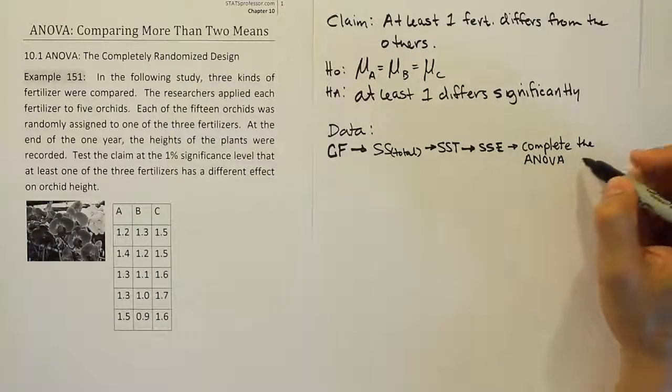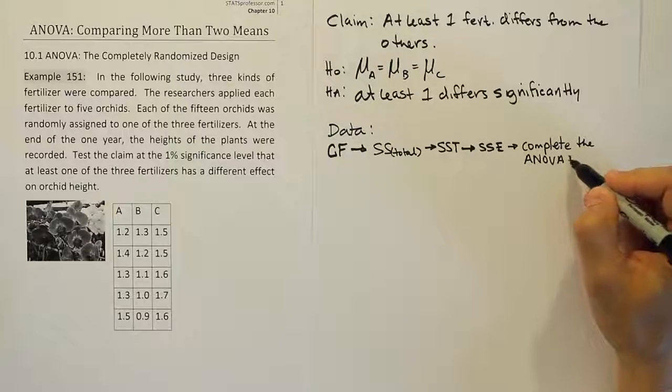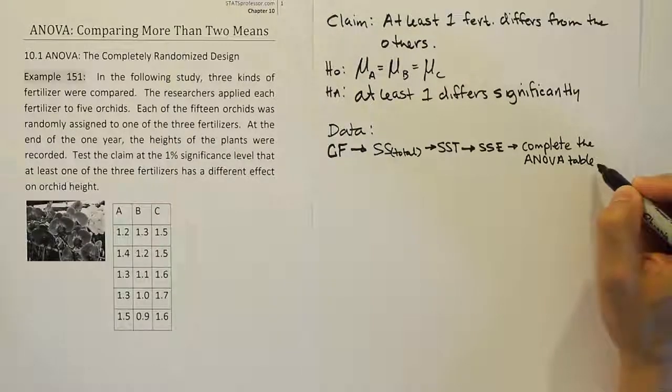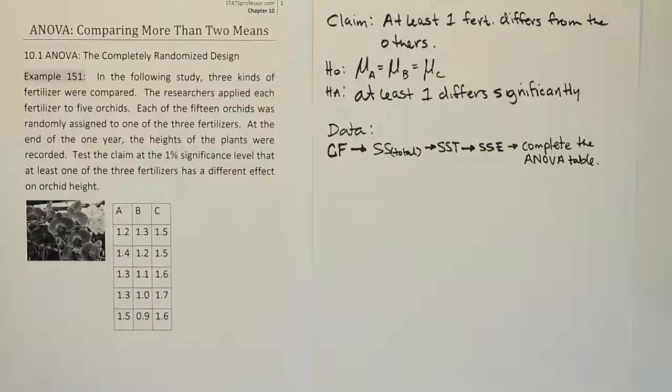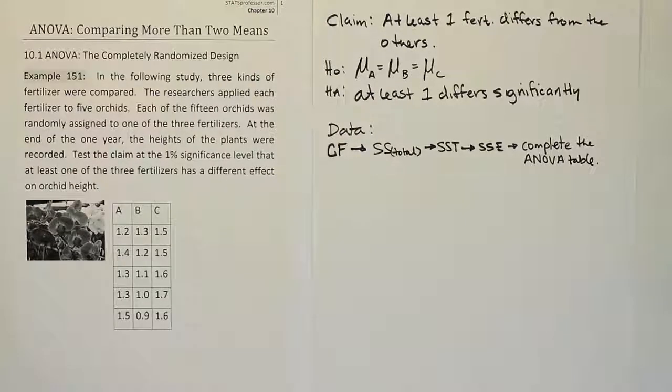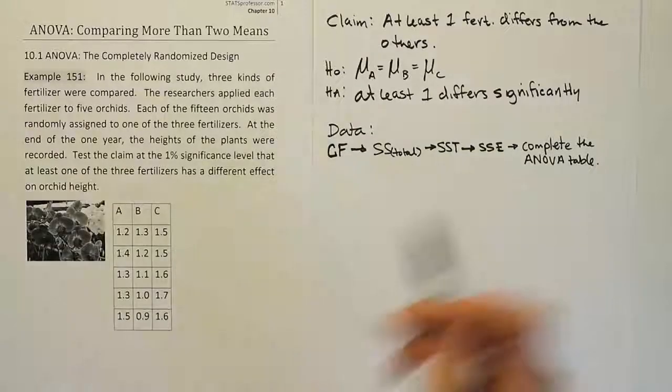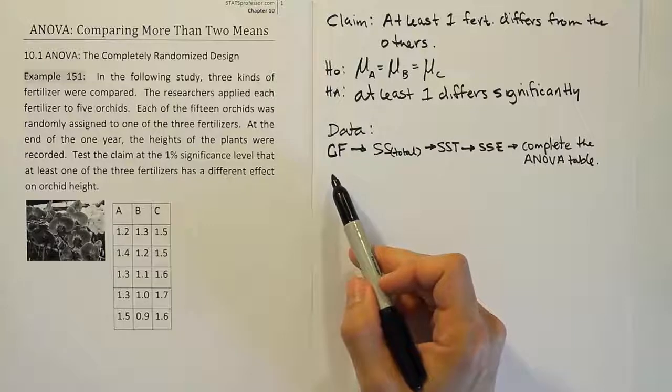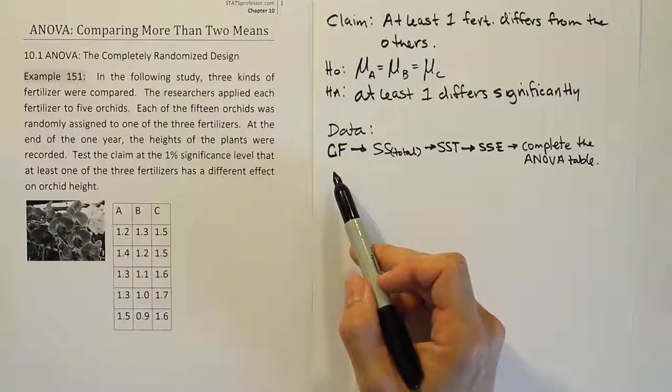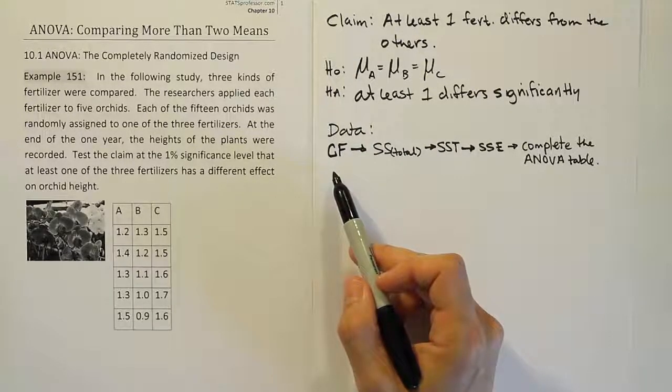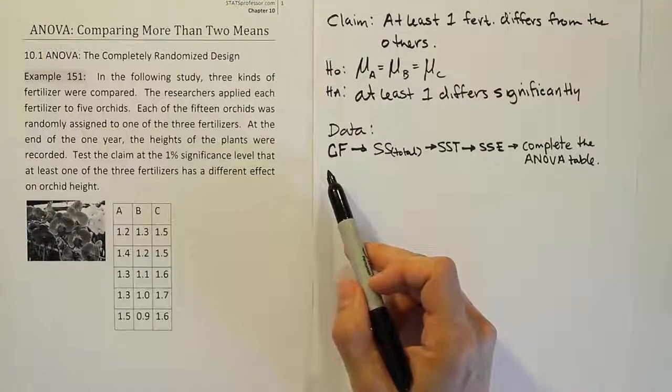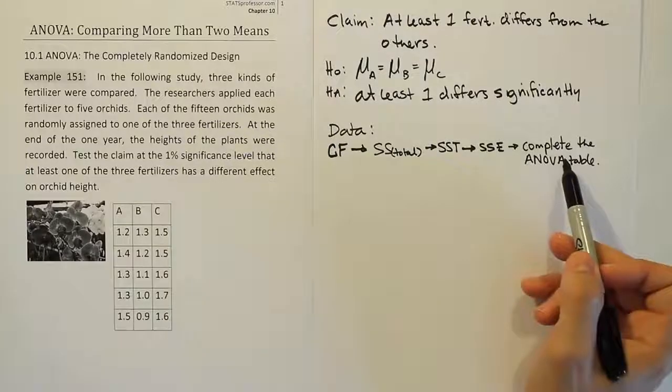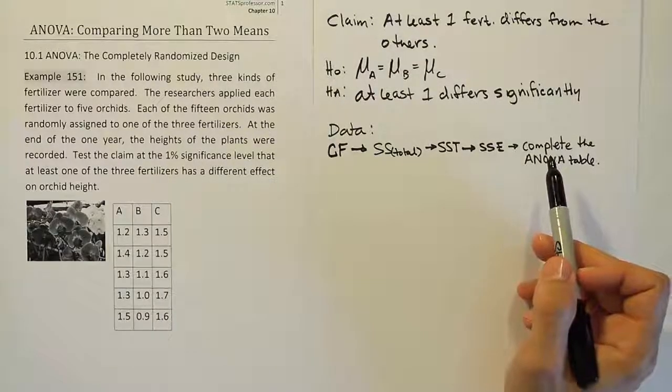Then we're going to get the sum of squares total. Then after getting the sum of squares total, we're going to move on to the sum of squares for treatment, SST. And then from there, we're going to end up producing the SSE. And then from there, what I would like you to do after that is to complete the ANOVA table. So ANOVA stands for analysis of variance. So we're going to complete the ANOVA table and that will essentially finish the problem for us.